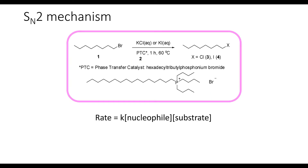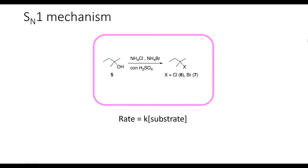Recall that the rate of SN2 reactions depends on the concentration of two components: the nucleophile and the substrate. So to get this reaction to go fast in lab, we are going to use a saturated solution of potassium iodide to have the highest possible concentration of iodine in solution. Now let's take a look at the mechanism of the SN1 reaction that we're going to be doing in this lab.